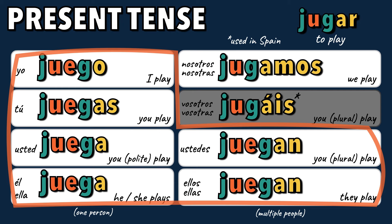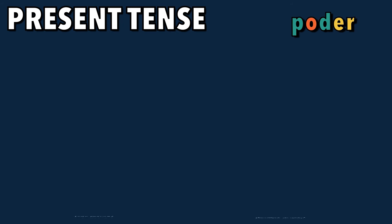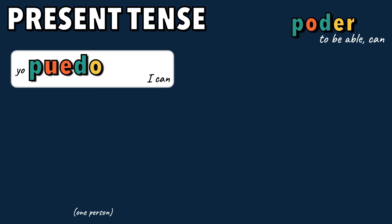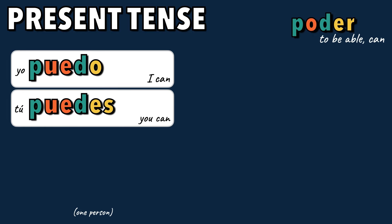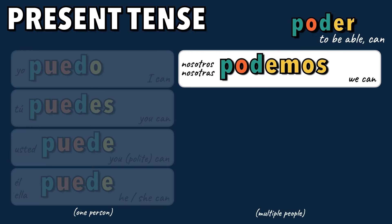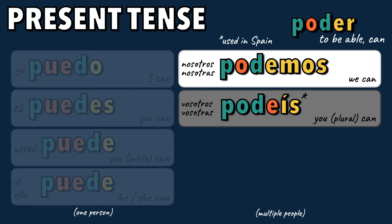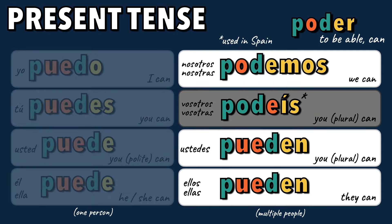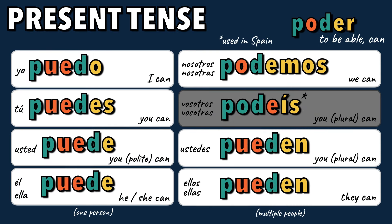Now, let's see how the verb changes to say different people can or are able. Notice the O only changes to UE in these forms.